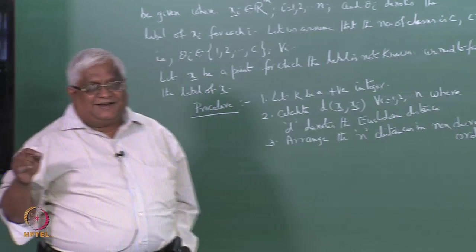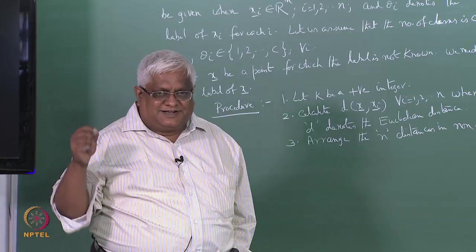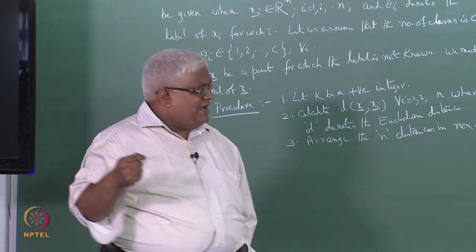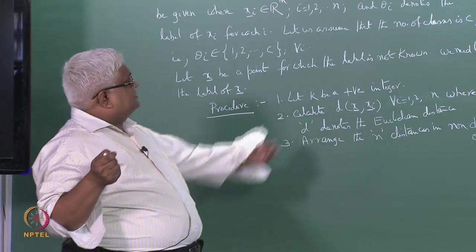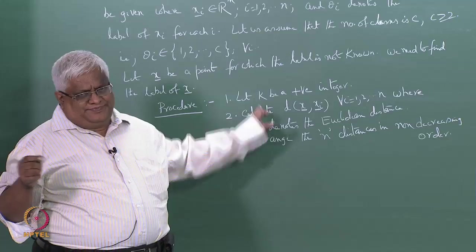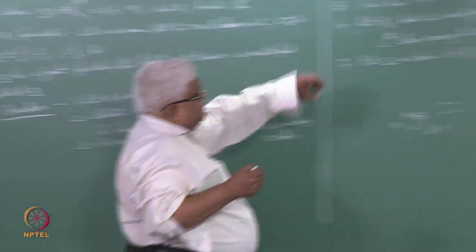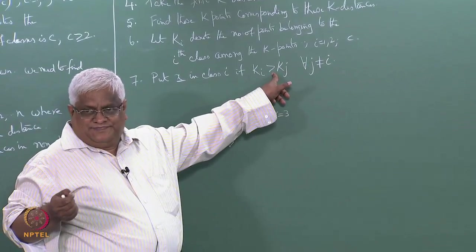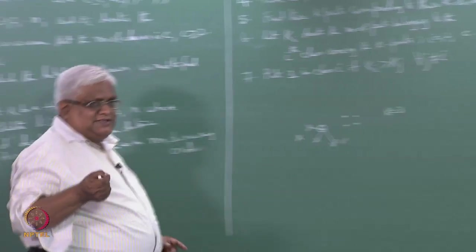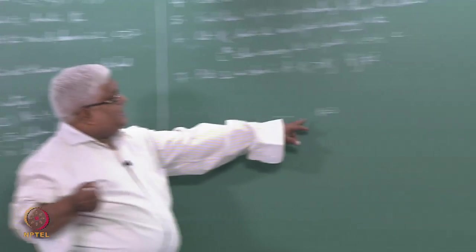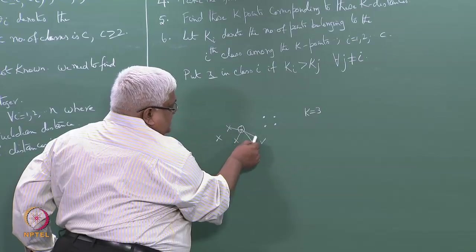There are probably many doubts. The first doubt is: how to choose the value of k. The second doubt is: what will happen if there is equality — if ki equals kj for two different classes and that is the maximum?